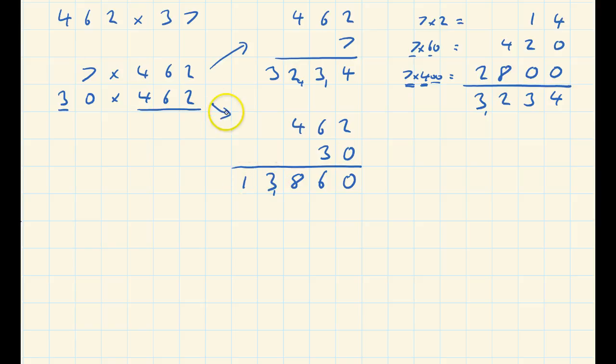So I get 3234 added to 13860, and that comes to 4, 9, 8, and 2 is 10, 3 and 3, 6 plus 1 is 7, 1. And that's a quite a long way of doing it.